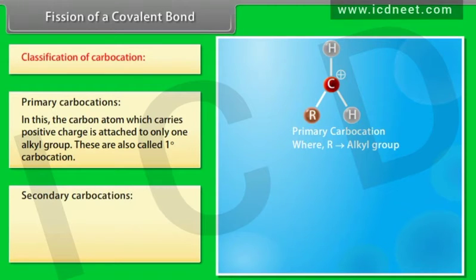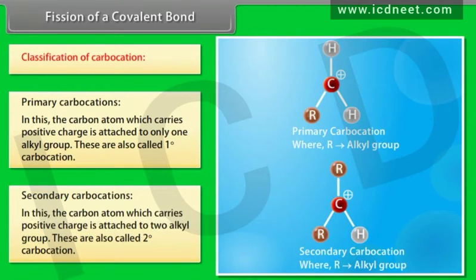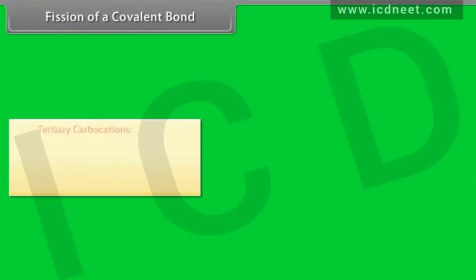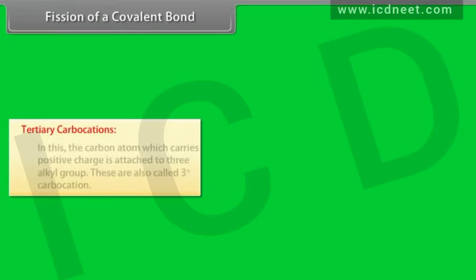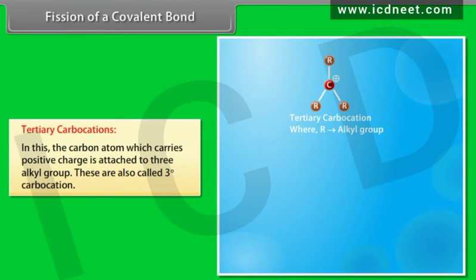Secondary carbocations: the carbon atom which carries positive charge is attached to two alkyl groups — these are also called two degree carbocations. Tertiary carbocations: the carbon atom which carries positive charge is attached to three alkyl groups — these are also called three degree carbocations.